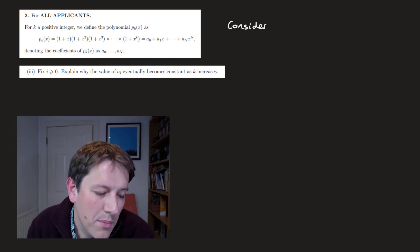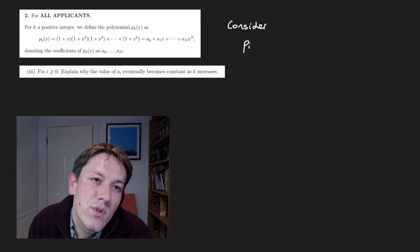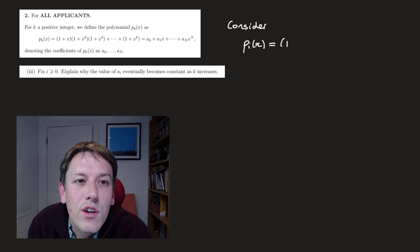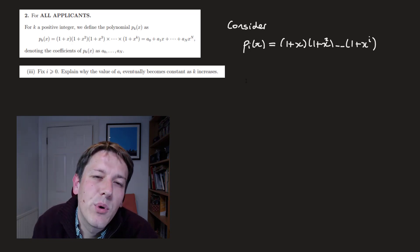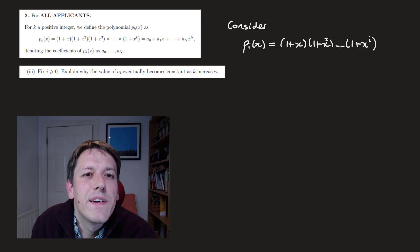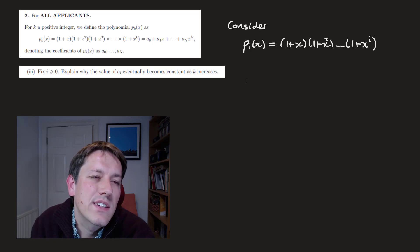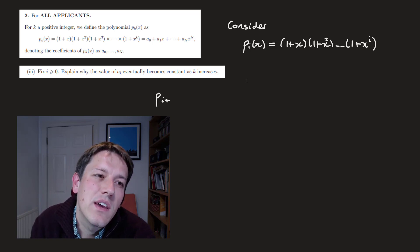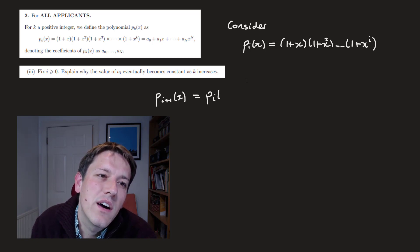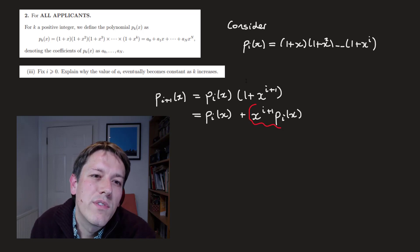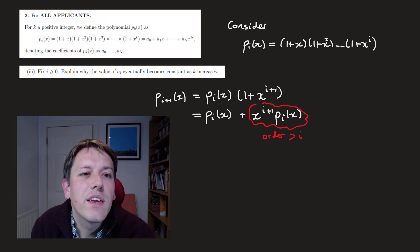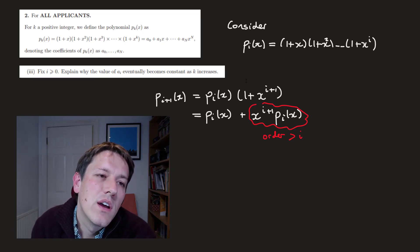Consider p_i(x) = (1+x)(1+x²)...(1+x^i). My argument is this is the last point at which x^i can change — the last point that the coefficient a_i can change. If you look at p_{i+1}(x), that's just p_i(x) multiplied by (1+x^{i+1}). If we multiply this out we get p_i(x) + x^{i+1} × p_i(x), and the point is all of these extra terms have order strictly bigger than i, because they're all multiplied by x^{i+1}.